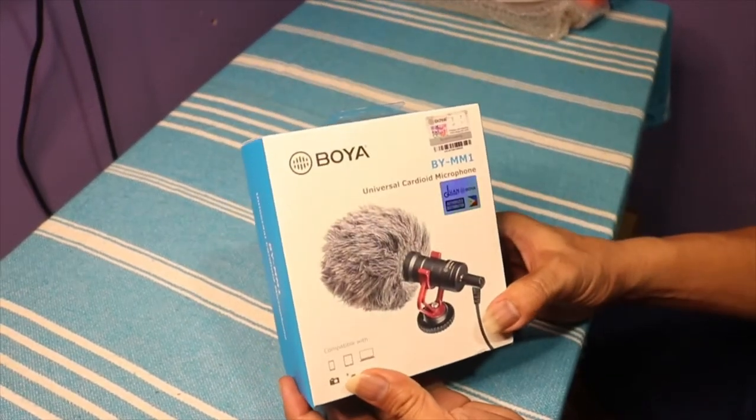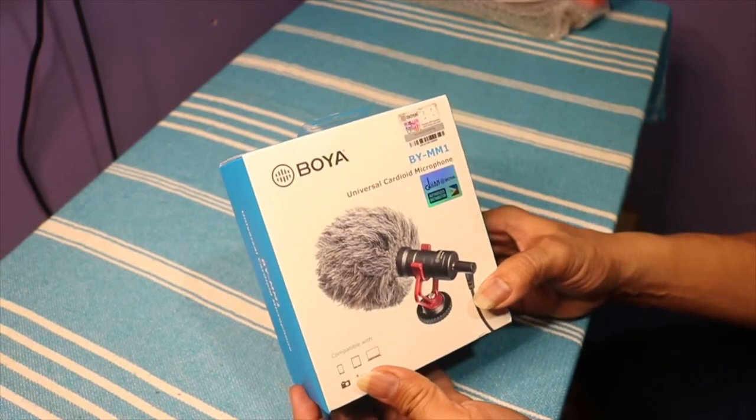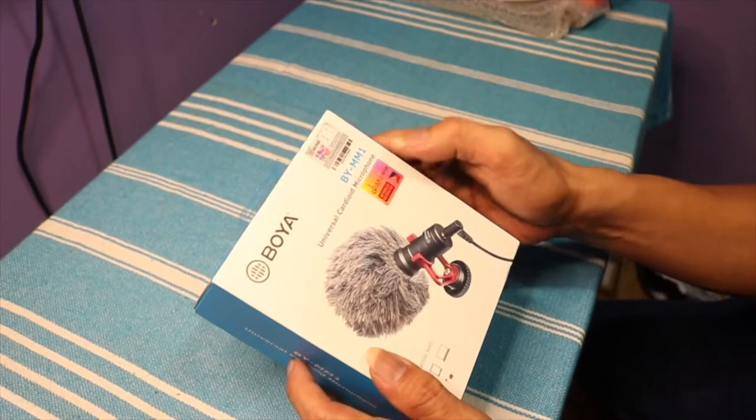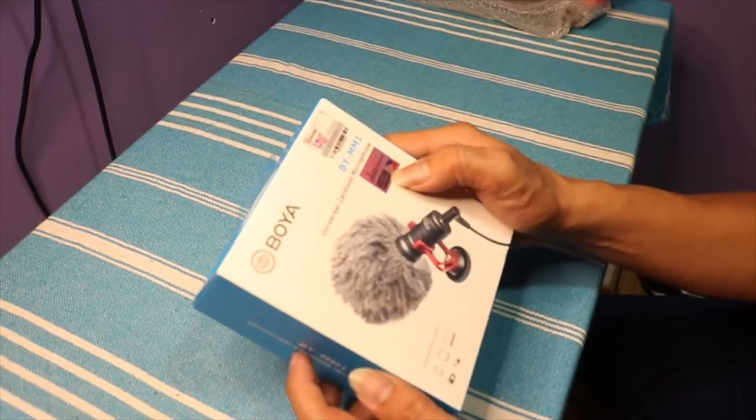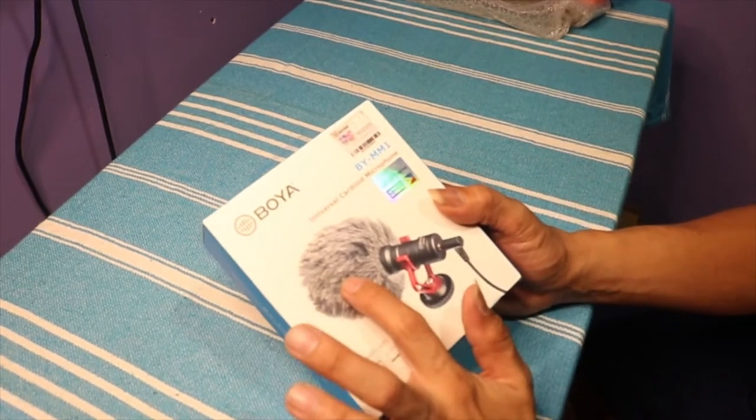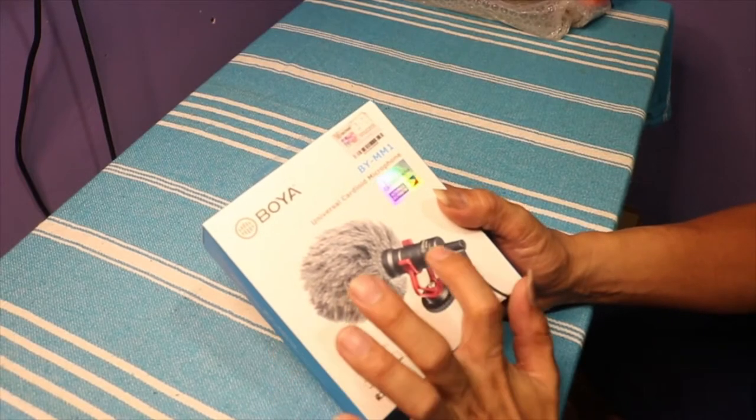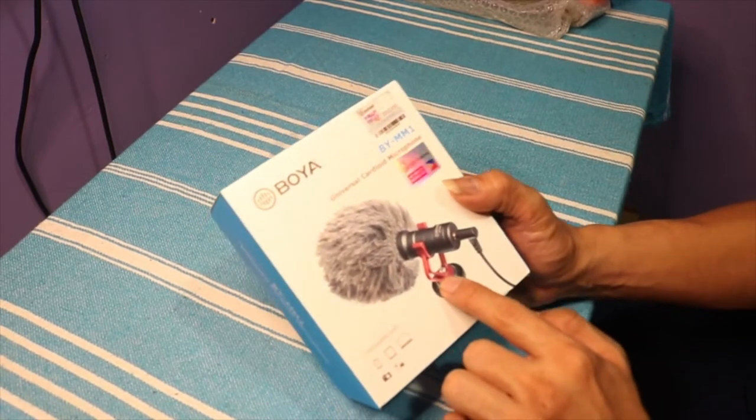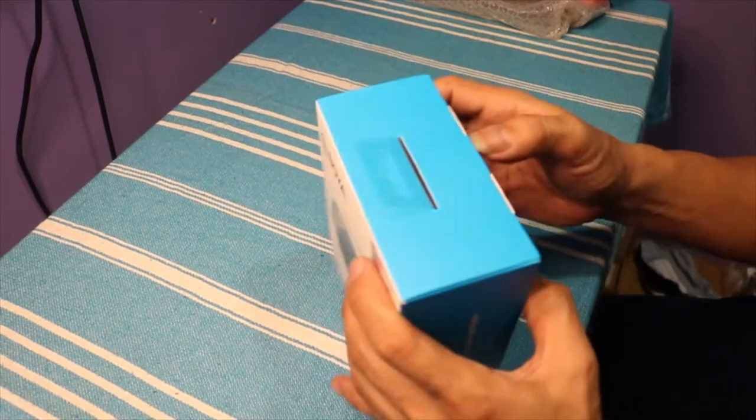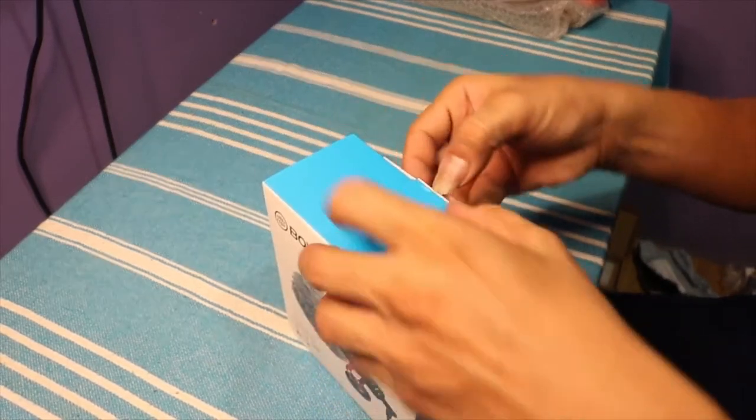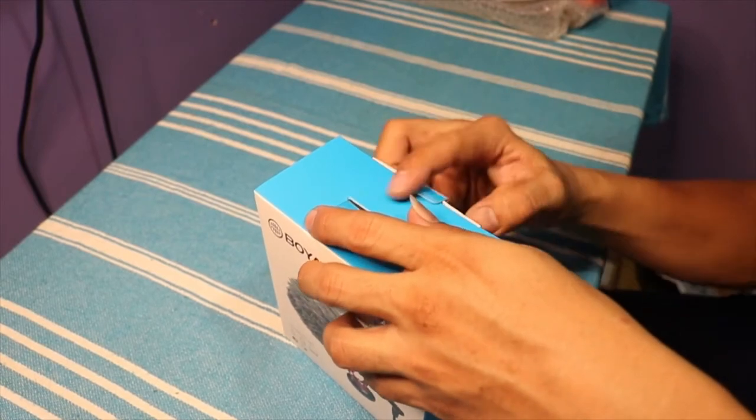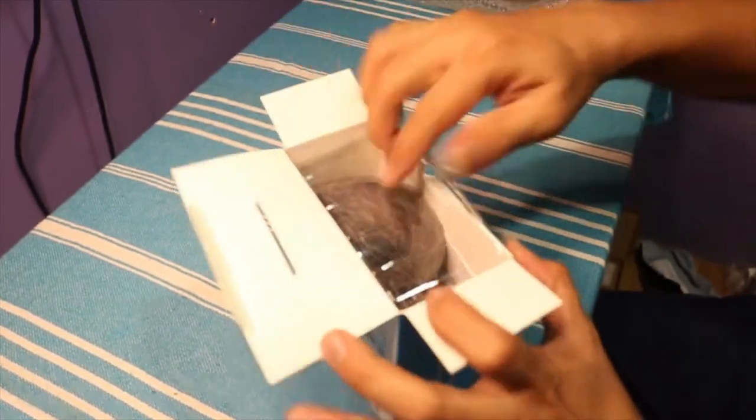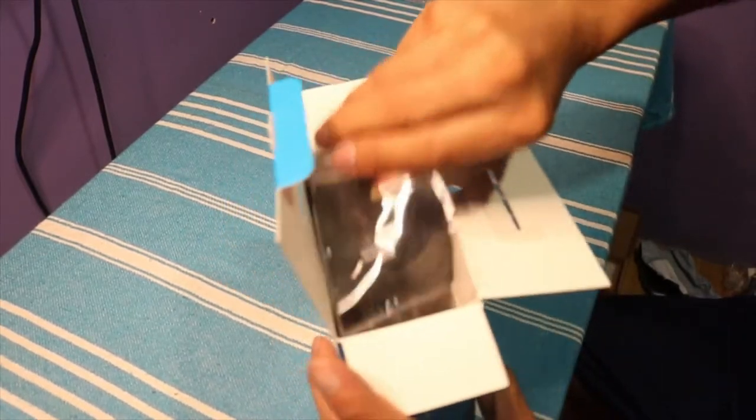So this is the product: Boya BY-MM1 universal cardioid microphone. One Gadget is a Boya authorized distributor. It comes with the fur for the microphone, the cable, and the shock mount. Let's see what's inside and show you what's in this product. Wow, there it is guys!